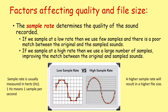If we sample at a low rate, then we use few samples, and there is a poor match between the original and the sampled sounds. If we sample at a high rate, then we use a large number of samples, improving the match between the original and the sampled sounds. You can see here that the low sample rate means we only have a rough approximation of the original sound, so it's not going to be particularly accurate. Whereas with the high sample rate, we're taking a lot more samples in the same amount of time and getting a much more accurate representation of the original sound. Of course, a higher sample rate will result in a higher file size, because we have more data to store.